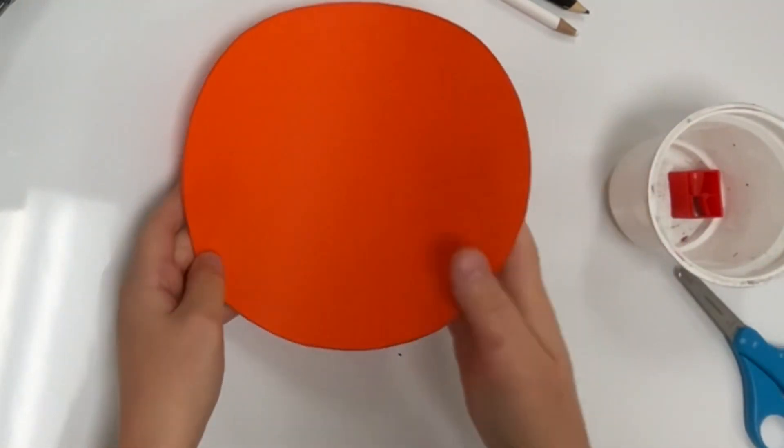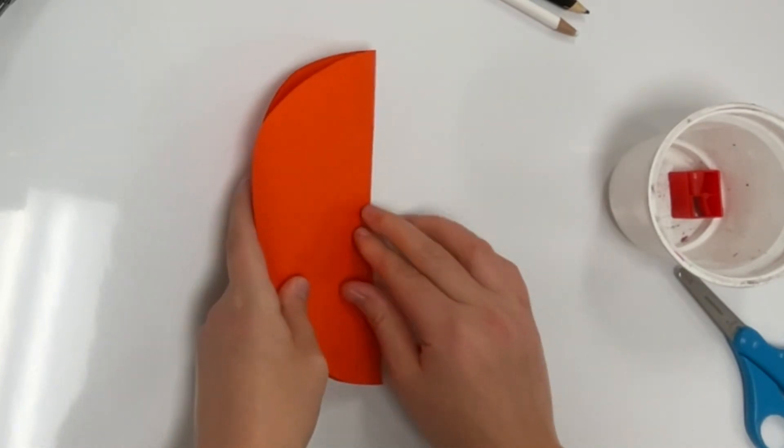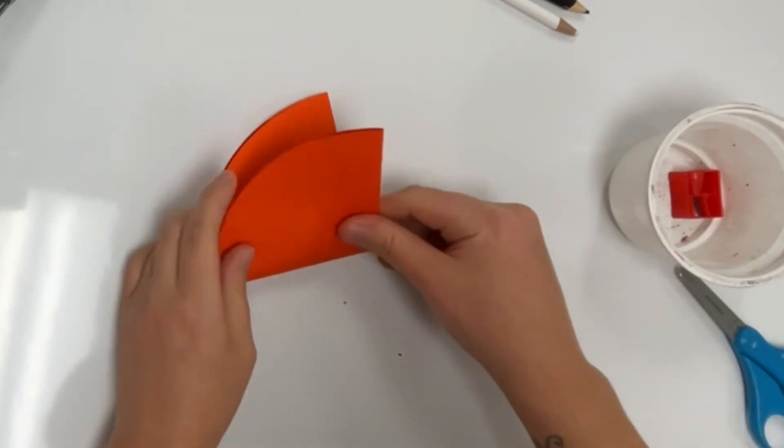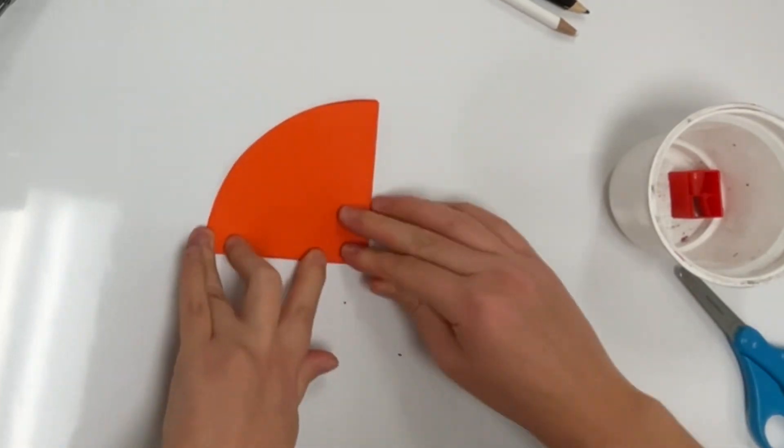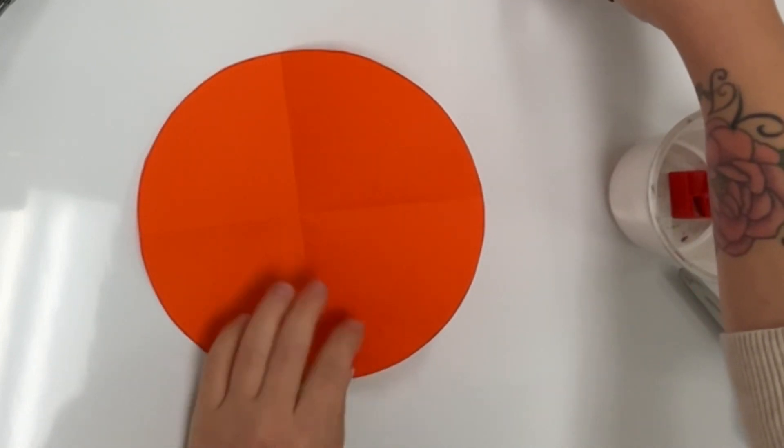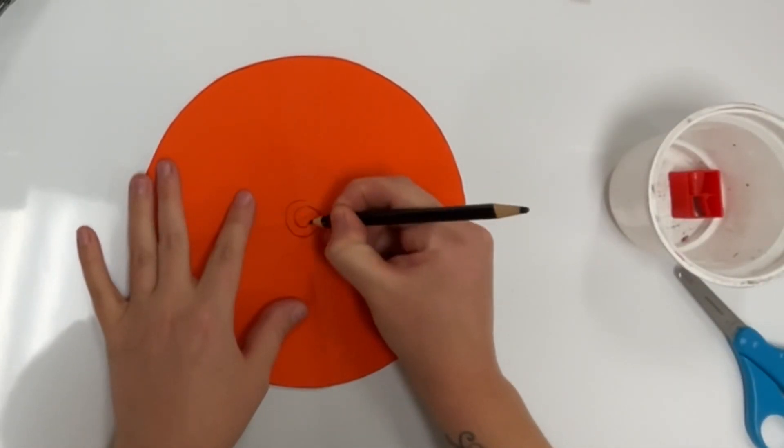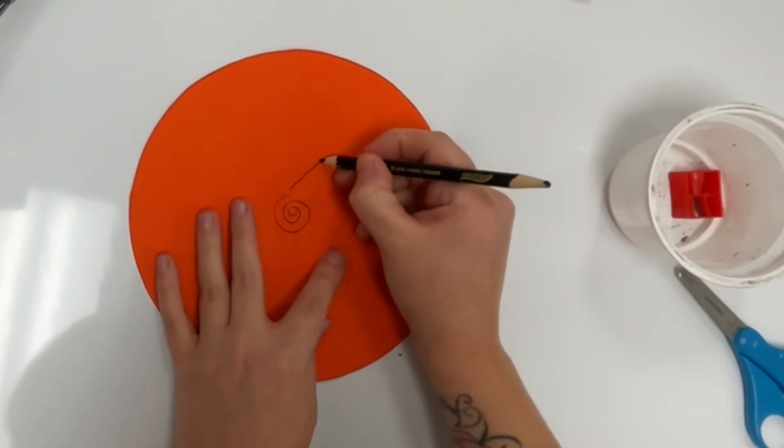Once my circle is cut out, I'm going to fold it in half and then in half one more time so that when I open it up I have four equal sections in my circle. Those four equal sections are going to help me create a design that has radial symmetry.